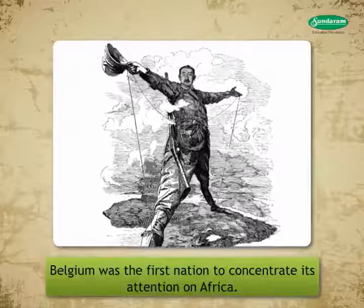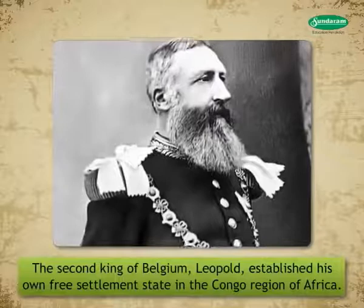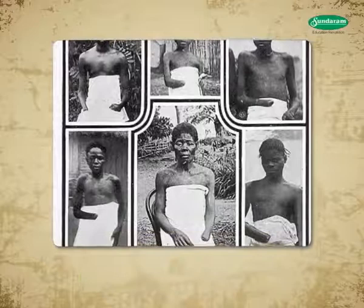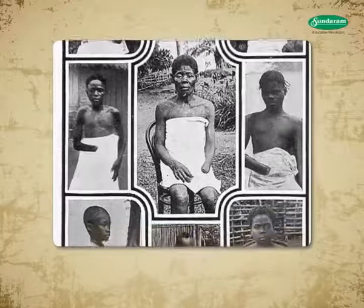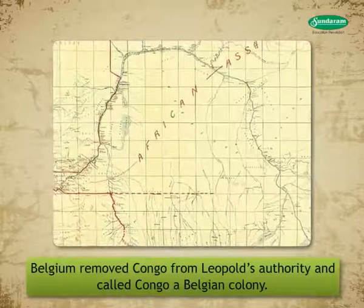Belgium was the first nation to concentrate its attention on Africa. The second king of Belgium, Leopold, established his own free settlement state in the Congo region of Africa. He exploited the people of Congo, and as he accumulated wealth through oppression, the Legislative Council of Belgium removed Congo from Leopold's authority and declared Congo a Belgian colony. Thus the first European colony was established in Africa.